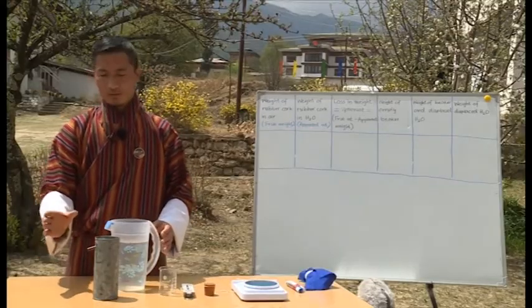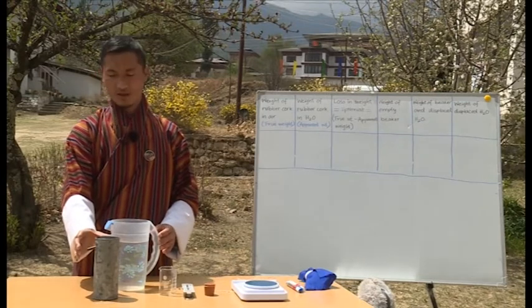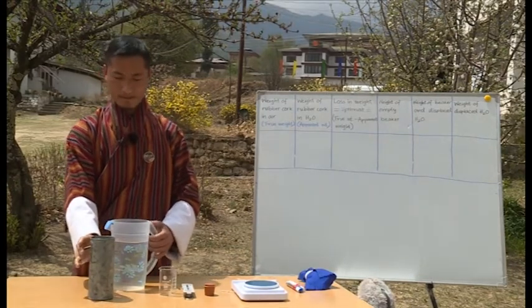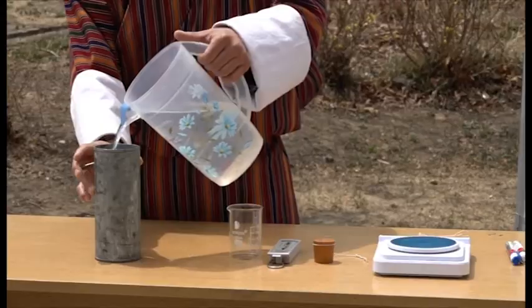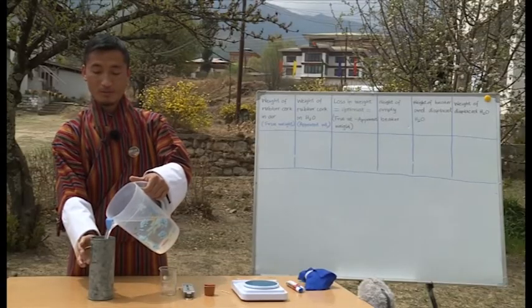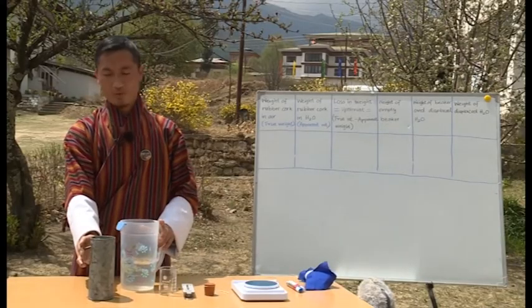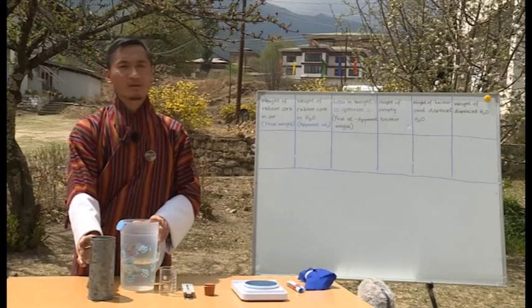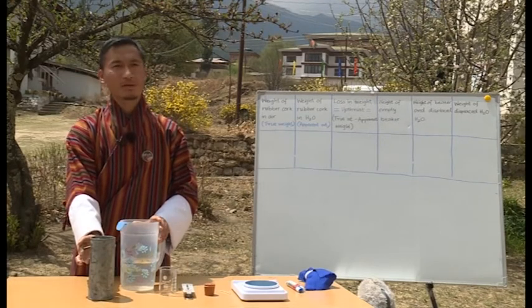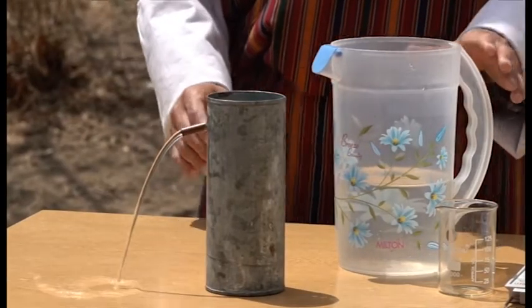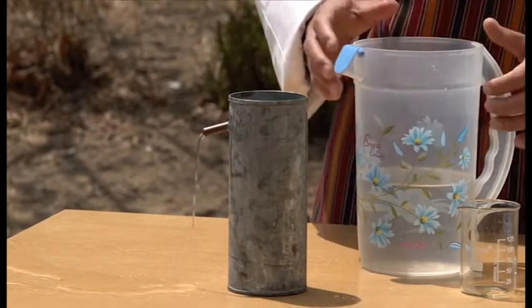First, we plug the spout of the displacement can with a finger and fill it with water all the way to the top — it must be above the level of the spout. The displacement can is now filled with water to its top. Next, I let the spout open and let the water flow out so that the water level drops exactly to the height of the spout.